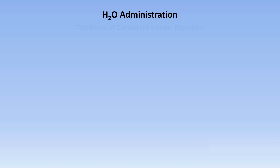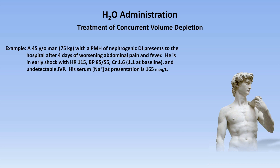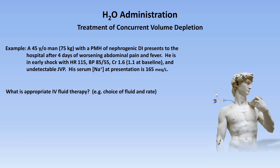For the second example, I'd like to discuss how to treat hypernatremia in the setting of severe volume depletion. A 45-year-old man with a lean body weight of 75 kg and a past medical history notable for nephrogenic DI presents to the hospital after four days of worsening abdominal pain and fever. He is found to be in early shock with a heart rate of 115, blood pressure of 85 over 55, creatinine of 1.6 with a baseline of 1.1, and an undetectable JVP. His serum sodium at presentation is 165. Since he's in shock, let's give him a peripheral IV and a triple lumen central line. What is the appropriate IV fluid therapy to treat this situation?